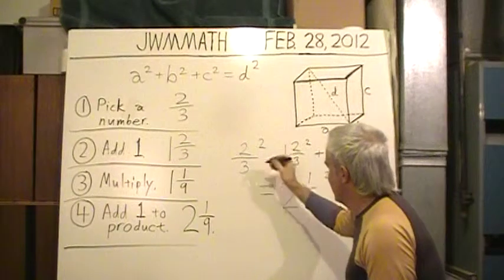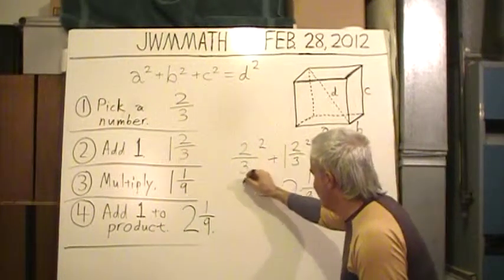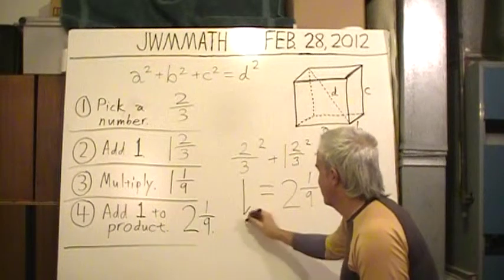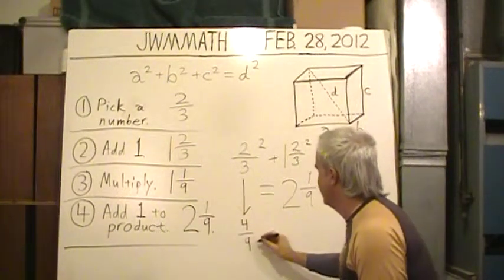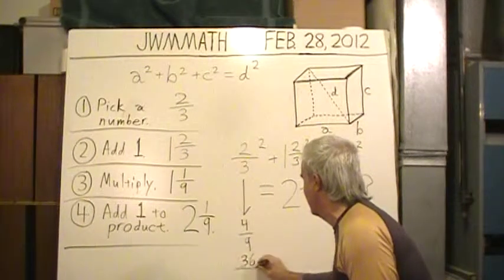So, I'm going to be raising these fractions to terms of eighty-one. Anyhow, two-thirds squared is four-ninths, and that equals thirty-six over eighty-one.